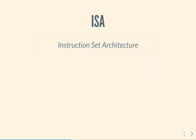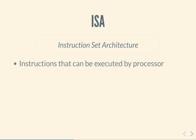What we do need to understand is the concept of an instruction set architecture. This is basically the set of instructions that can be executed by a given processor. Typical instructions include things like ADD, which adds two registers and stores the result in another register; MOVE, which takes data from memory into a register or vice versa; and JUMP, which changes the flow of control and allows you to jump to a new location in memory.